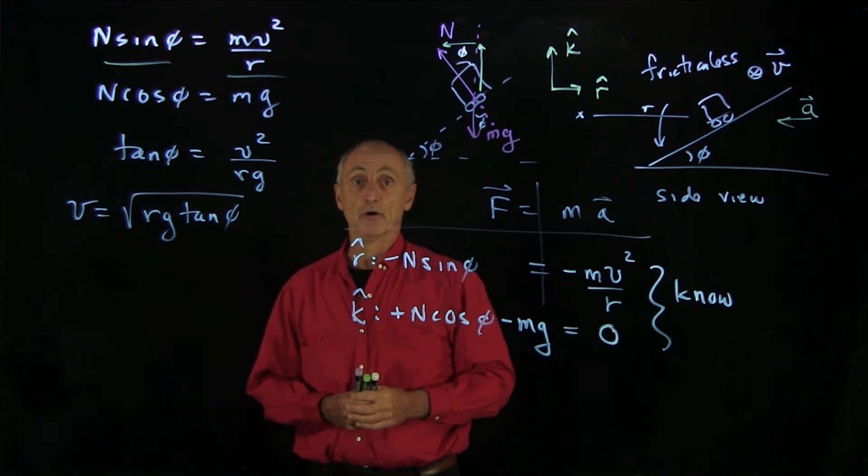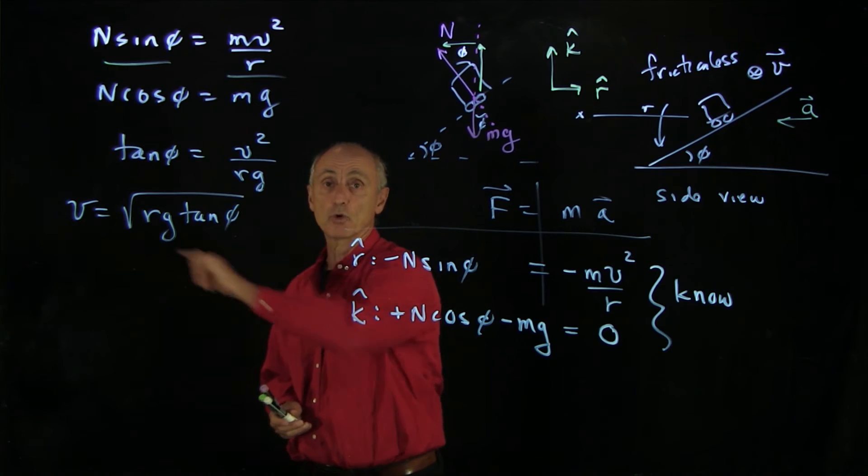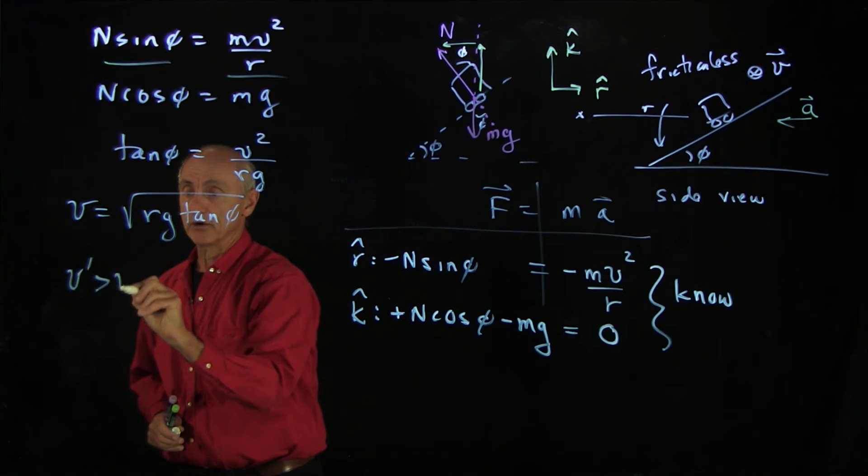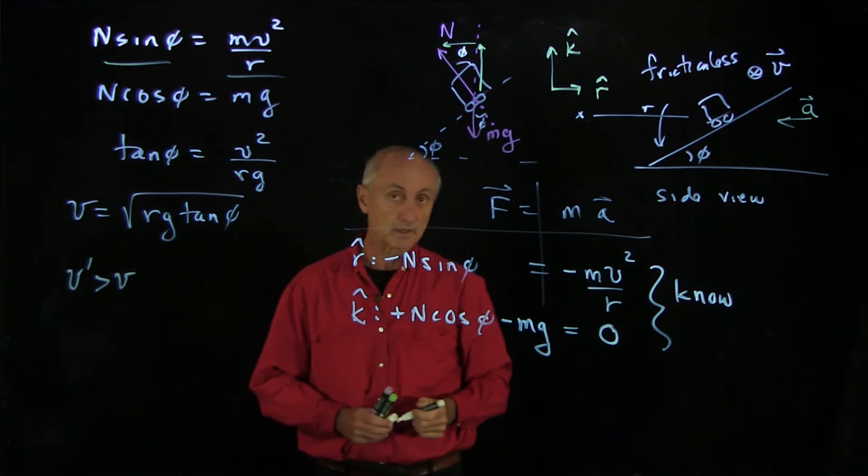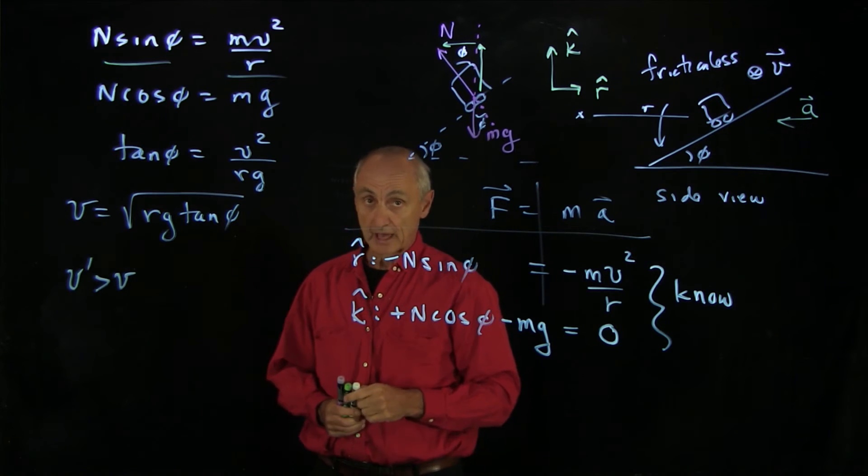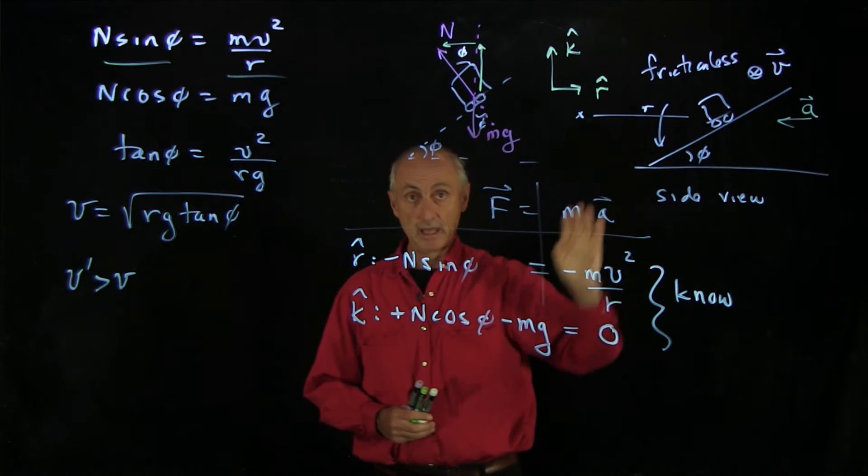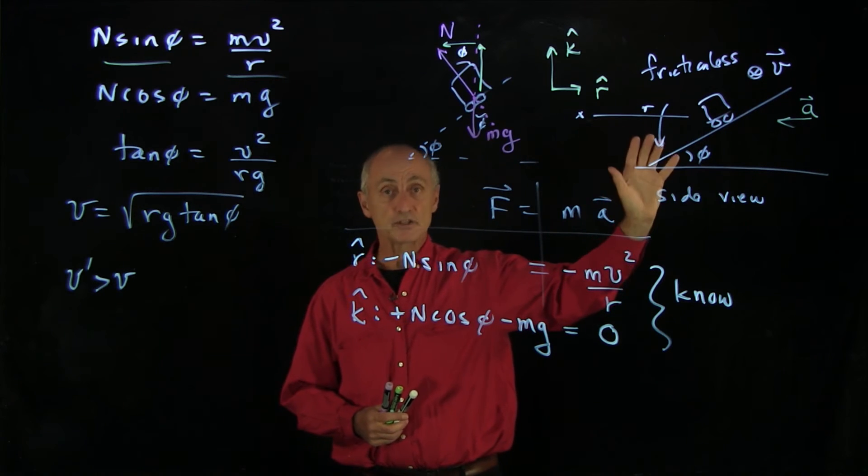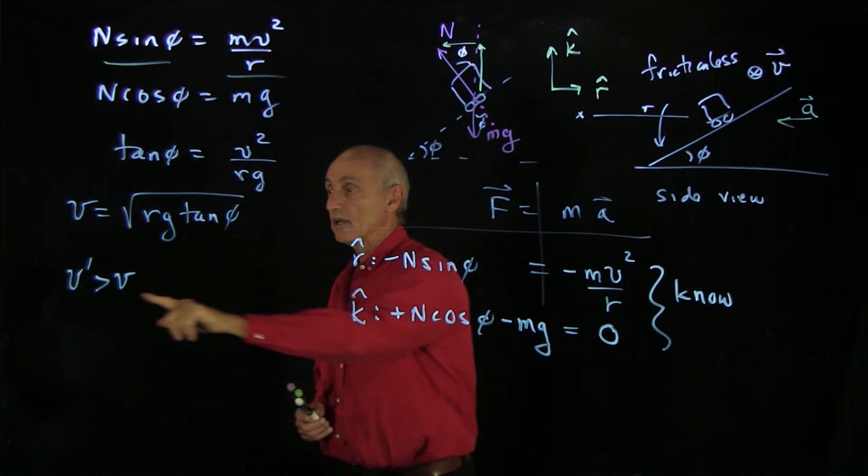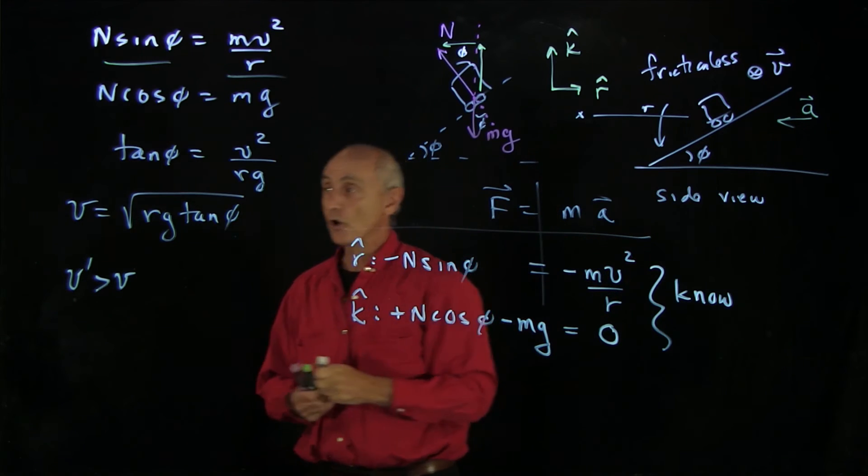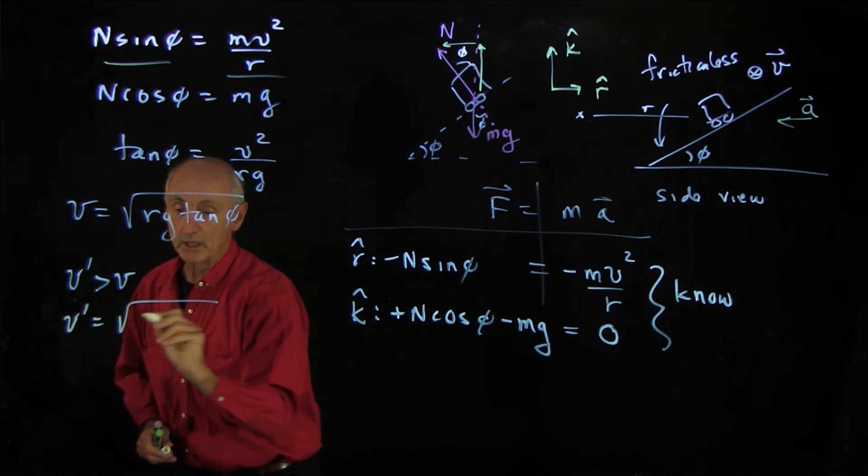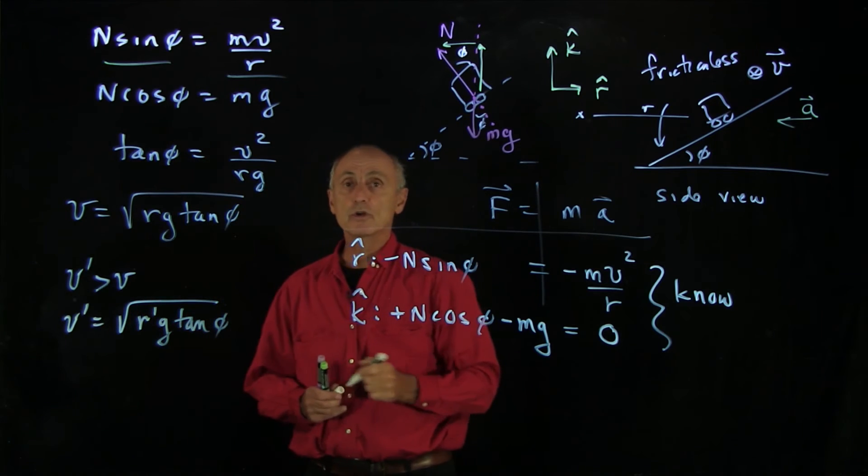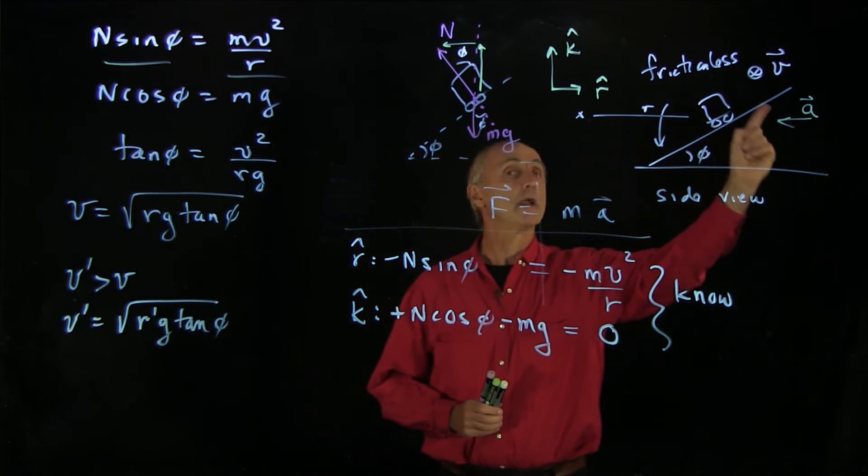What we would now like to think about is what would happen if you're traveling faster or slower than this speed. Suppose we have v prime bigger than this speed. What that means is that the car is going faster. And the new equilibrium, if you asked what would the radius be such that traveling at v prime the car undergoes circular motion, v prime would be equal to r prime g tan phi. So in order to go at this speed, you have to go at a greater radius.